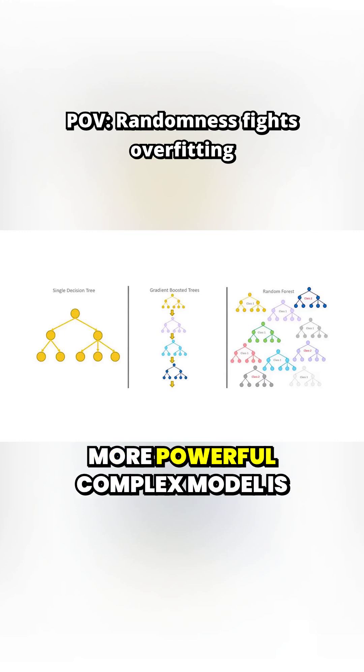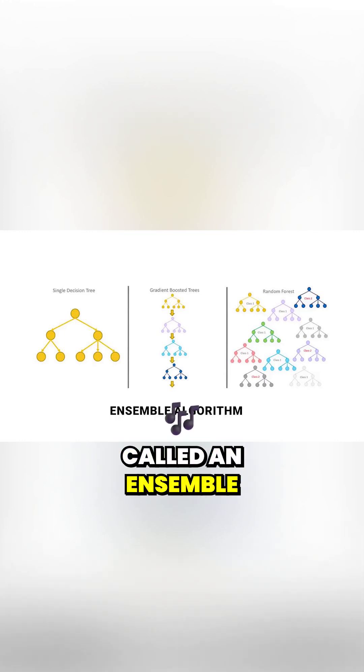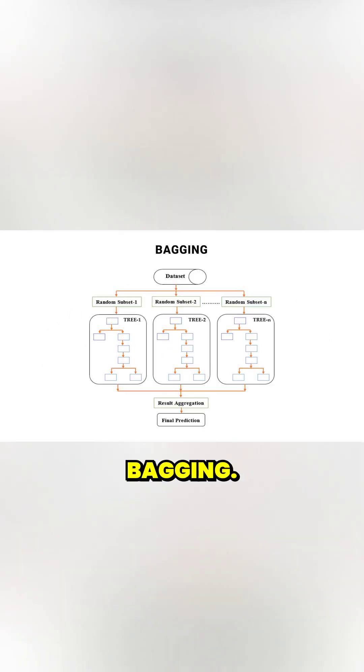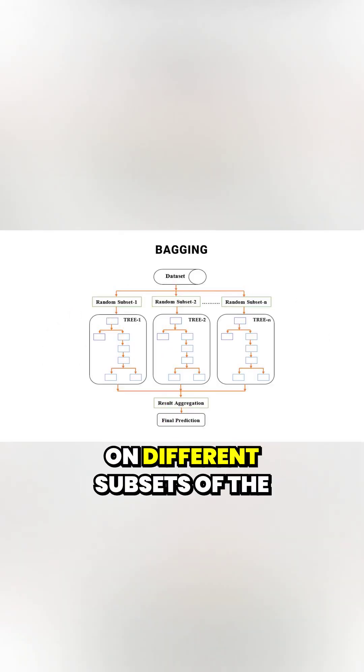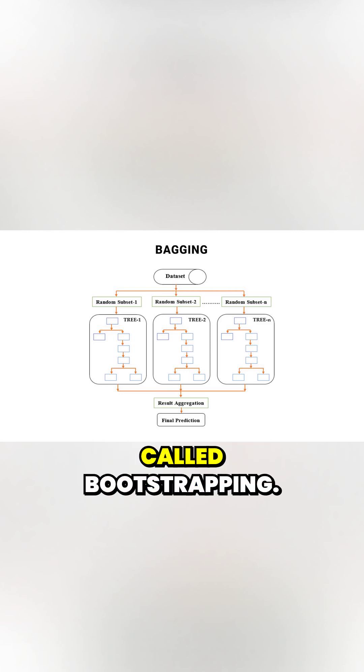Combining many simple models to a more powerful complex model is called an ensemble algorithm. One form of ensembling is bagging, where we train multiple models on different subsets of the training data using a method called bootstrapping.